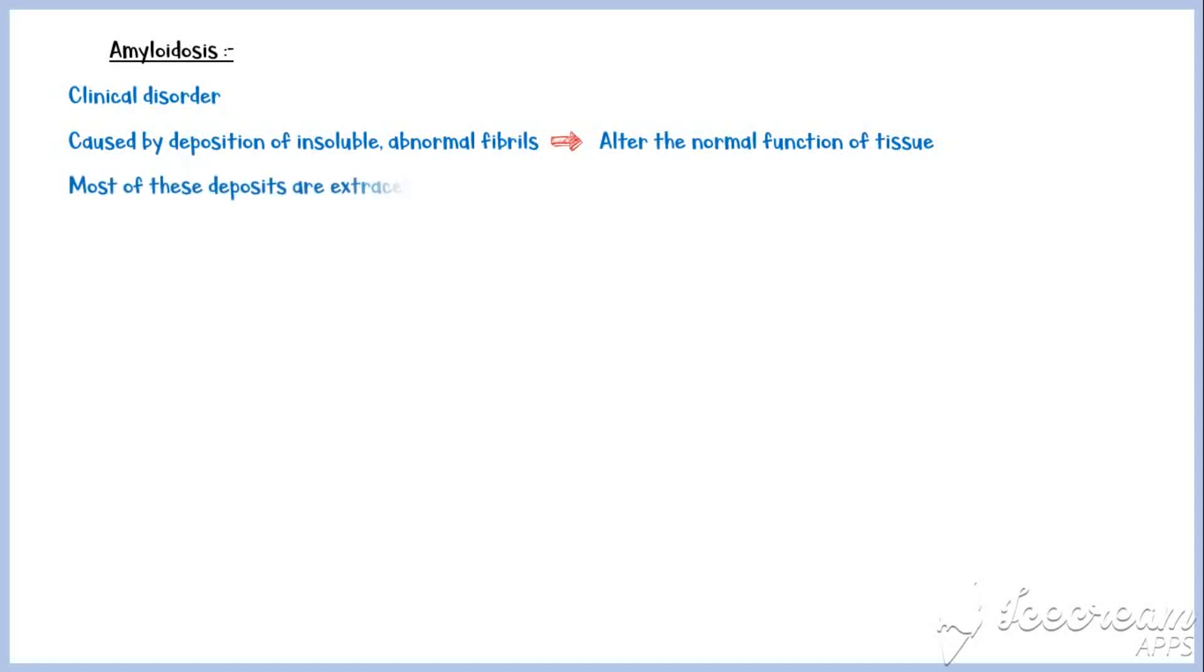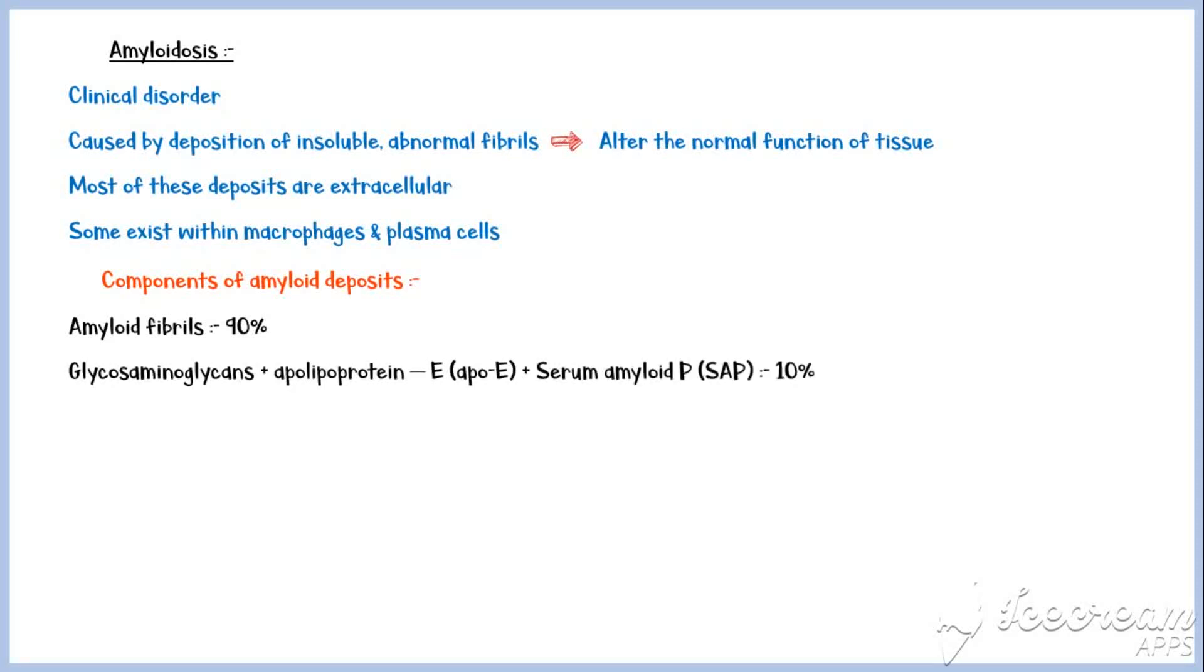Most of these deposits are extracellular, but there is evidence that some deposits exist within macrophages and plasma cells. If we take the components of amyloid deposits, more than 90% of them consist of amyloid fibrils, which are made up of abnormal, misfolded proteins. About a 10% fraction of these deposits are composed of other substances like glycosaminoglycans, apolipoprotein E, and serum amyloid peptide.